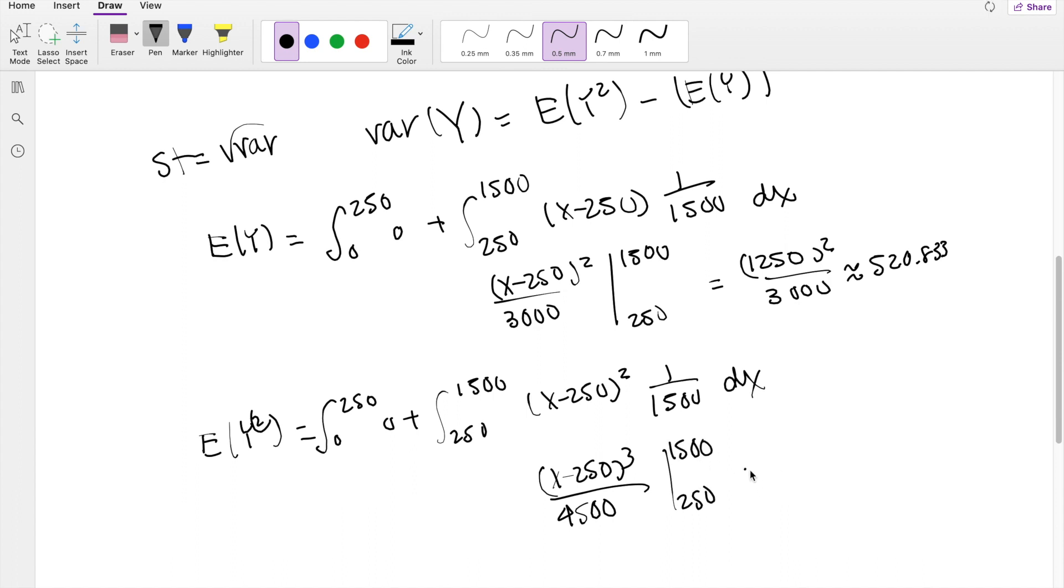The lower limit just gives you 0, so you get, this is equal to 1,250 cubed over 4,500, which is approximately equal to 434,027.778.